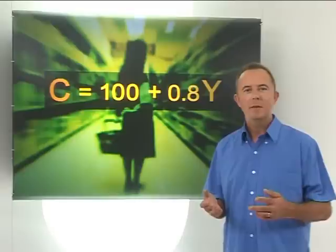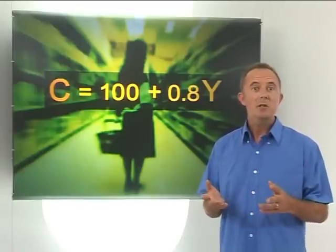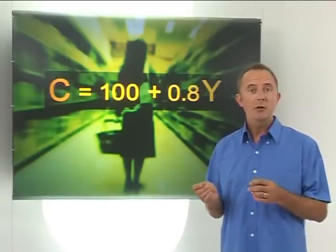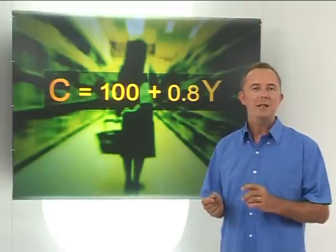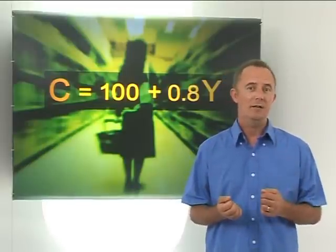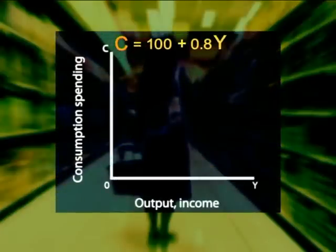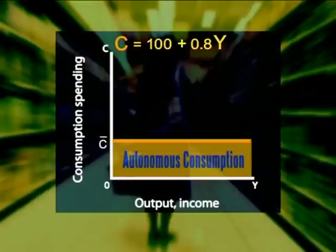Let's go through that again, this time with the following consumption function. Consumption spending c equals 100 plus 0.8 times y. We must illustrate this as a consumption curve. First, we plot the axes. Income y on the horizontal and consumption spending c on the vertical. According to this consumption function, autonomous consumption c bar is equal to 100. So this is where we set our vertical intercept.